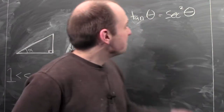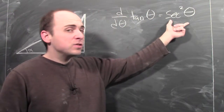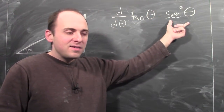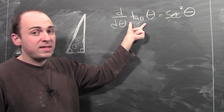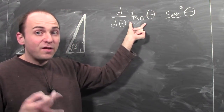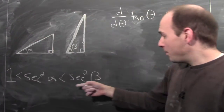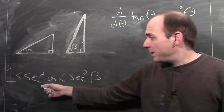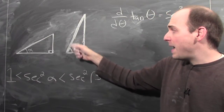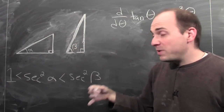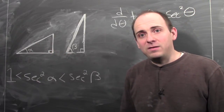The significance of that is right here: the derivative of tangent theta is secant squared theta. This is telling me how wiggling theta affects tangent — it affects it by a factor of secant squared theta. So in this example, where secant squared beta is a lot bigger than secant squared alpha, the effect of wiggling beta on the tangent of beta should be a lot larger than the effect of wiggling alpha on the tangent of alpha.